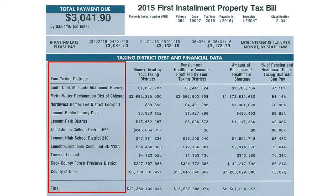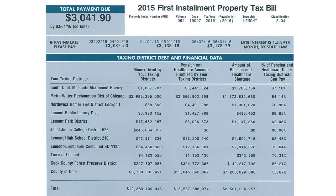In the middle portion of your tax bill, under your taxing districts, are the seven to twenty local governments that make up your bill. These local governments rely on your property taxes to operate.